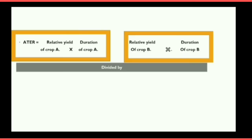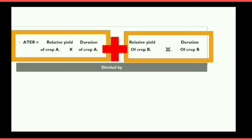ATR — Area Time Equivalent Ratio — is calculated by the summation of the relative yield of the first crop multiplied by its duration, and the relative yield of the second crop multiplied by its duration. For example, if you are taking two crops in an intercropping system like maize and finger millet, we can calculate ATR by finding the relative yield of each crop and knowing its duration.